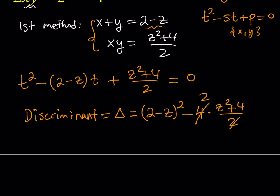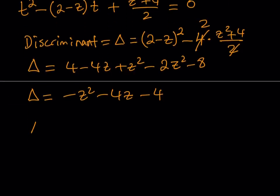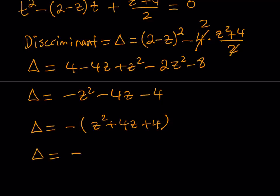We can cross-cancel to get a factor of 2. Expanding gives 4 minus 4z plus z squared. Then distributing the negative 2 gives negative 2z squared minus 8. So the discriminant equals: z squared minus 2z squared is negative z squared, then negative 4z, then 4 minus 8 is negative 4. If you take out a negative one, you get something familiar — it equals negative (z plus 2) squared.